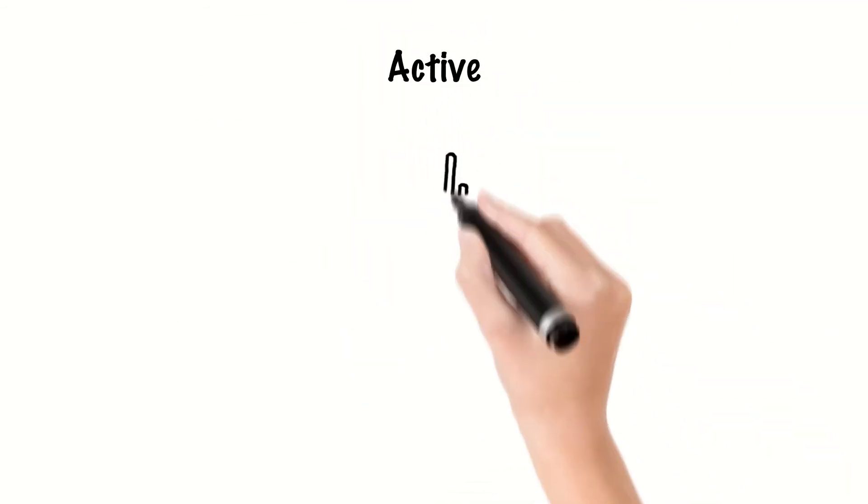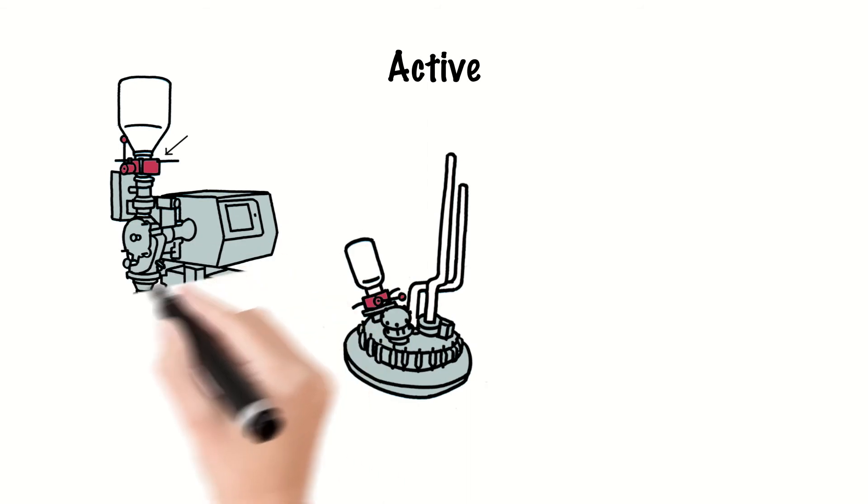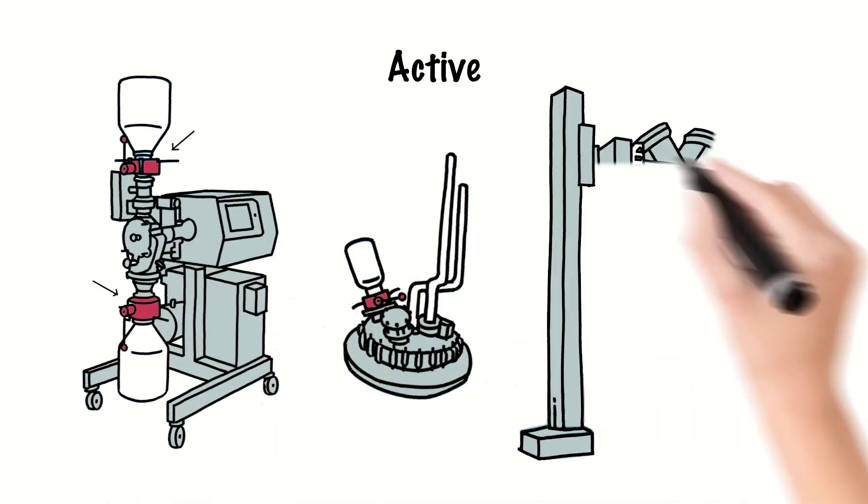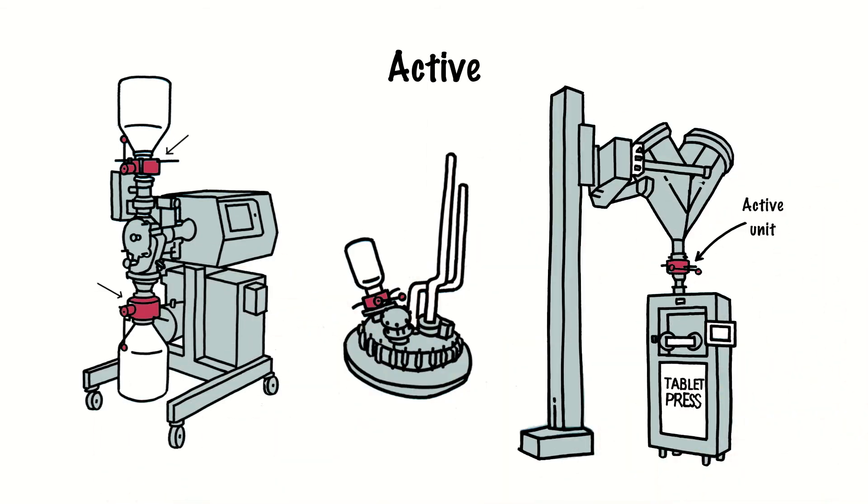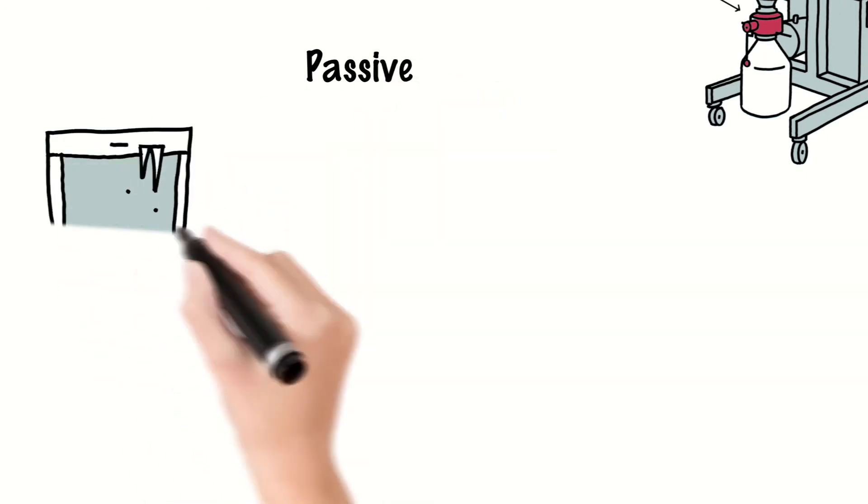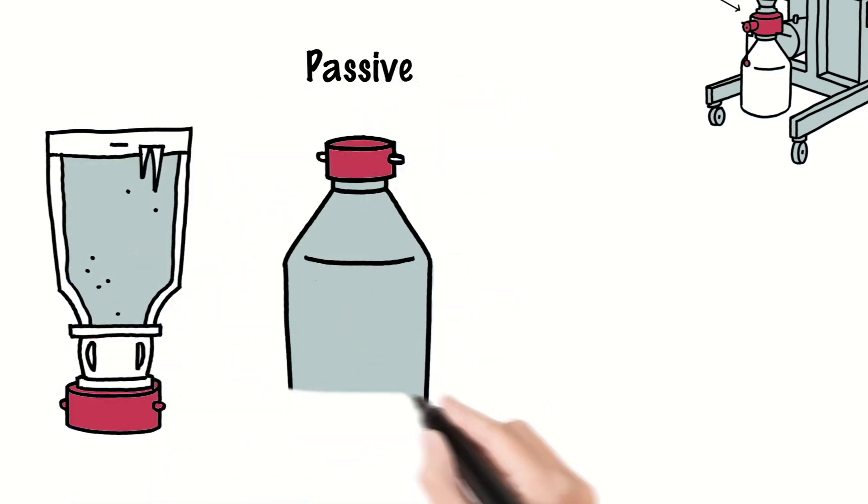The active half is typically attached to the process machine such as a reactor vessel, mill, or tablet press, and the passive half to the mobile container, charge bag, charge bottle, or IBC.